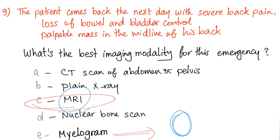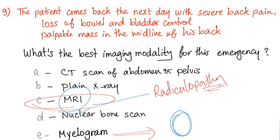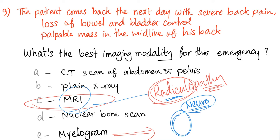MRI is the right choice here because the diagnosis is radiculopathy — a pathology of the nerve roots as they exit the spinal cord. This is different from neuropathy, which is an injury or pathology of a peripheral nerve, far from the central nervous system. To diagnose radiculopathy, you need an MRI.